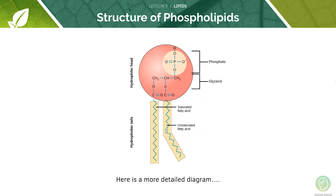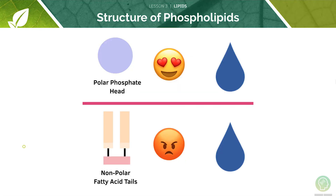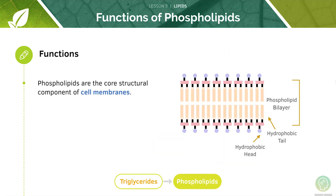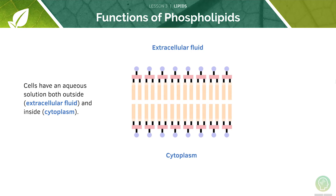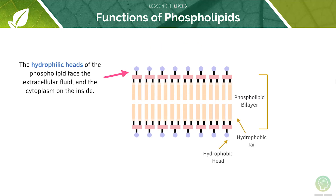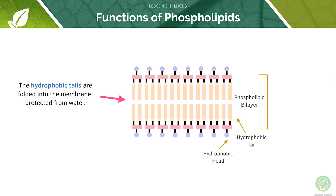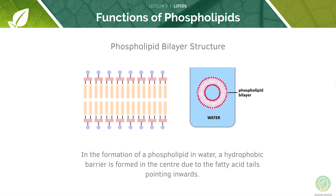Here's a detailed diagram. We will explore this structure in more detail in another tutorial, but let's have a quick run through it here. Phospholipids are found in cell membranes. The barrier formed is known as a phospholipid bilayer, which is another name for cell membrane. Since cells have an aqueous solution both outside in the extracellular fluid and inside in the cytoplasm, the hydrophilic heads will face outwards and the hydrophobic tails will face inwards. This means that a bilayer is formed.